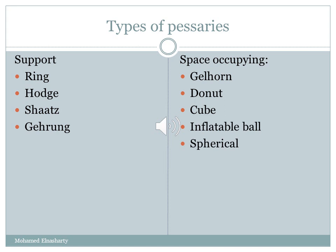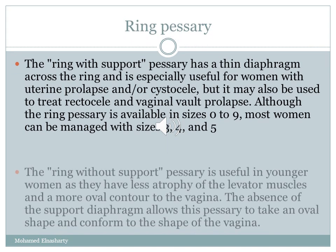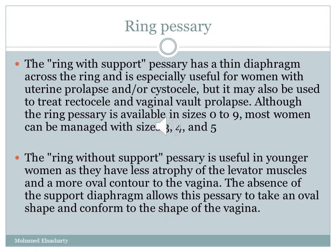Support pessaries include the ring, Hodge, Shaatz, and Gehring pessaries, while space-occupying pessaries include the Gellhorn, donut, cube, inflatable ball, and spherical pessaries. The ring pessary is the most commonly used; the ring with support has a central diaphragm across the ring, and is especially useful for women with uterine prolapse and/or cystocele. It may also be used for rectocele and vaginal vault prolapse. Although ring pessaries are available in sizes 0 to 9, most women can be managed with size 3, 4, or 5. The ring without support is useful for younger women with less levator atrophy and a more oval vaginal contour.